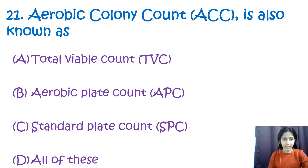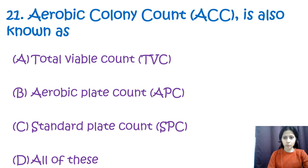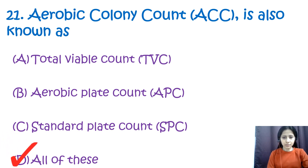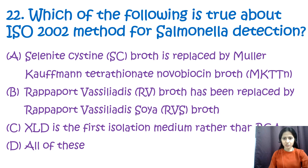Question number twenty-one: aerobic colony count is also known as option A: total viable count (TVC), option B: aerobic plate count (APC), option C: standard plate count (SPC), and option D: all of these. The correct answer is option D — aerobic colony count is also known as TVC, APC, and SPC.